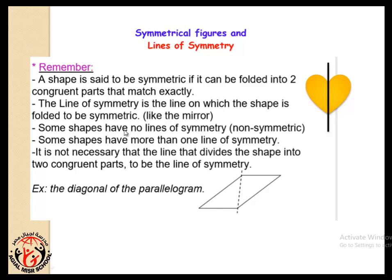In symmetry, we can't move the shapes to become congruent. Some shapes have no lines of symmetry. Some shapes have more than one line of symmetry. It is not necessary that the line that divides the shape into two congruent parts be the line of symmetry. As a parallelogram, the diagonal isn't a line of symmetry but it divides the parallelogram to two congruent triangles.